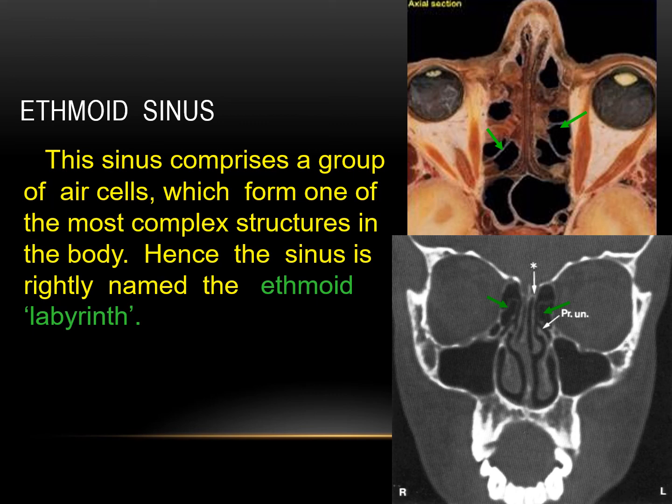The ethmoid sinus comprises a group of air cells which form one of the most complex structures in the body. Hence the sinus is rightly named the ethmoid labyrinth — labyrinth meaning a maze, a place you can get lost in.